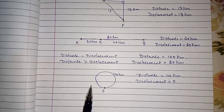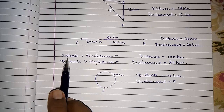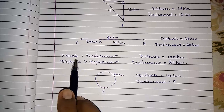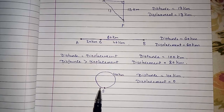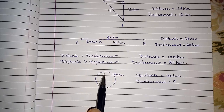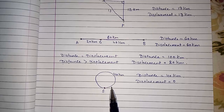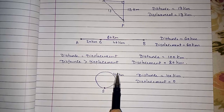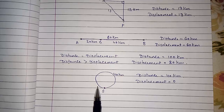If he is moving, distance is greater than zero. Distance will never be zero because every time he starts moving he covers some distance. So distance cannot be zero, but displacement can become zero.